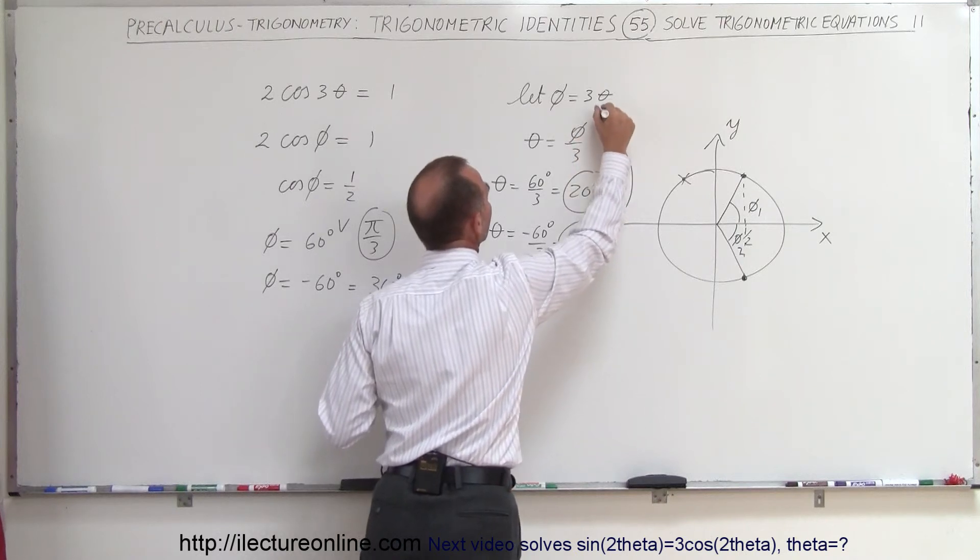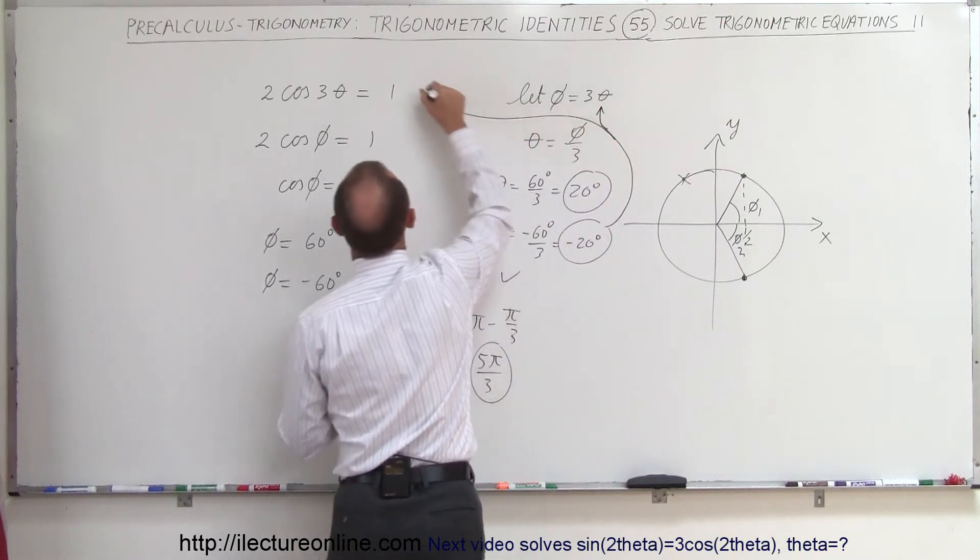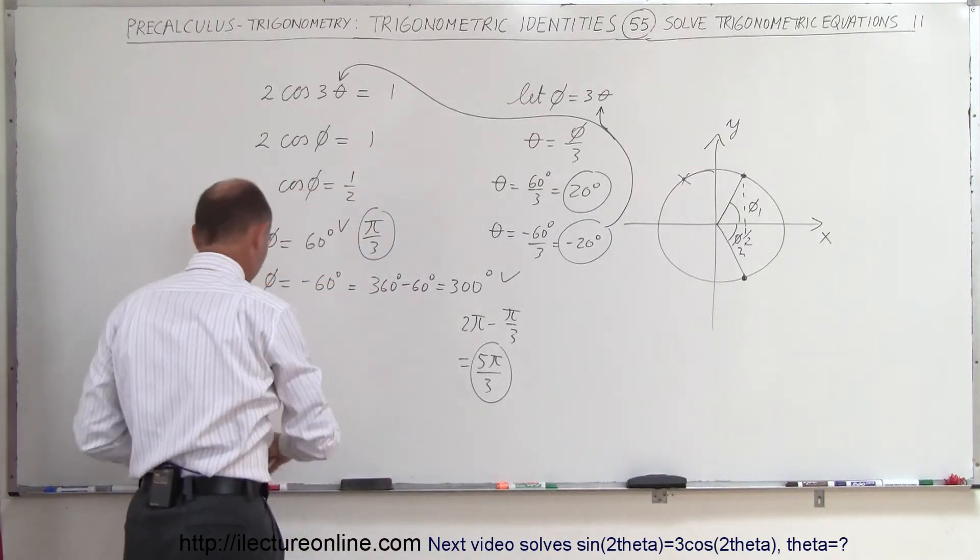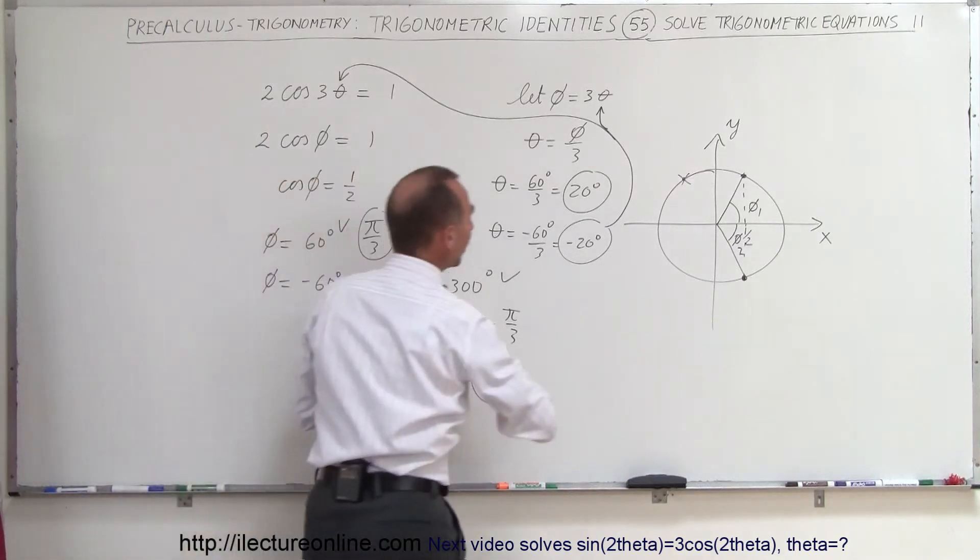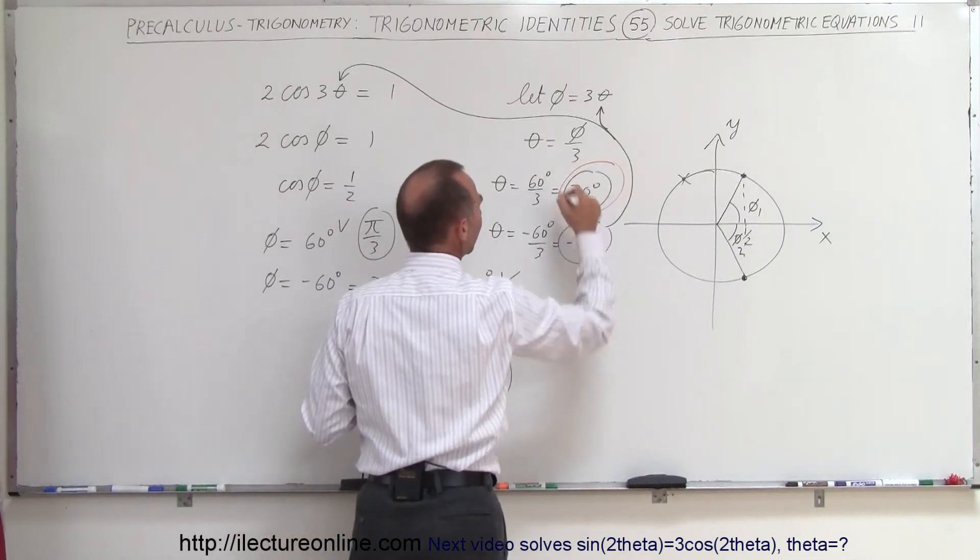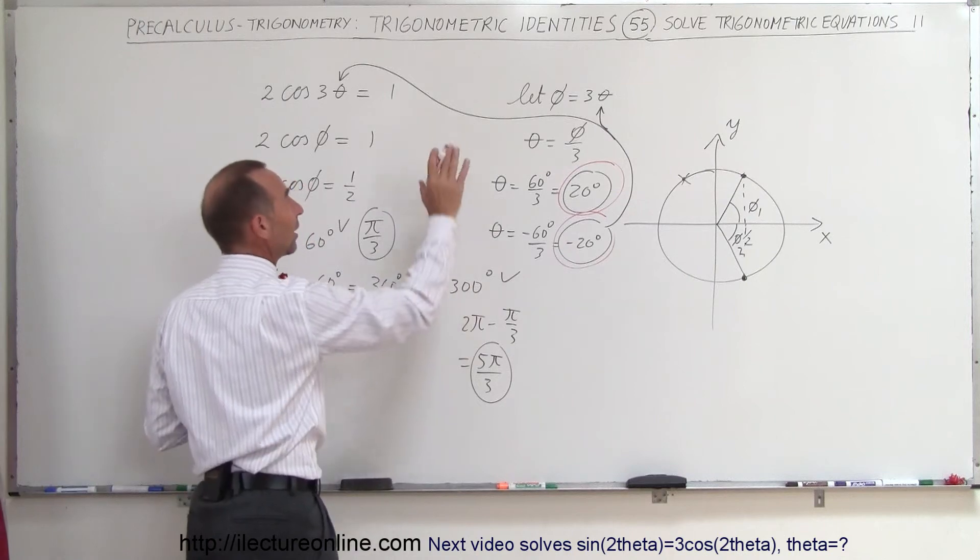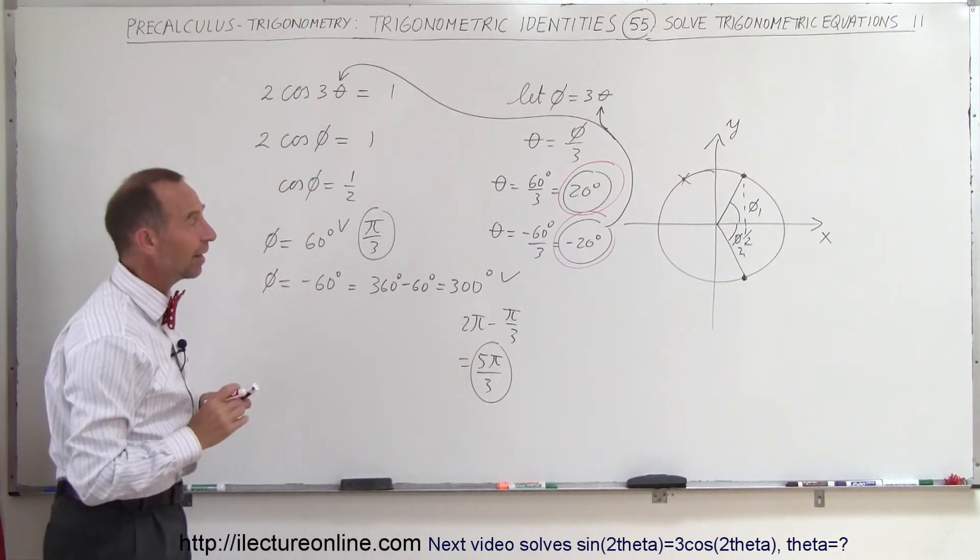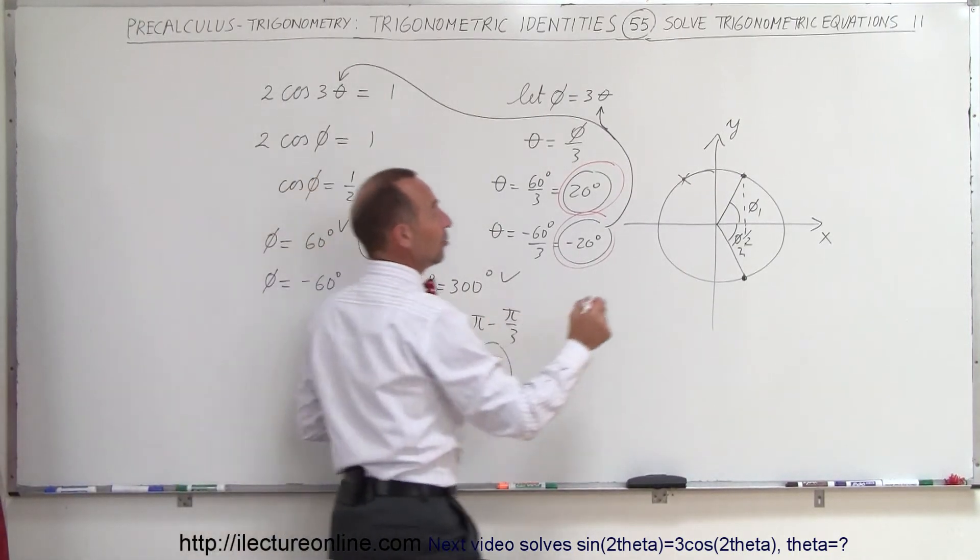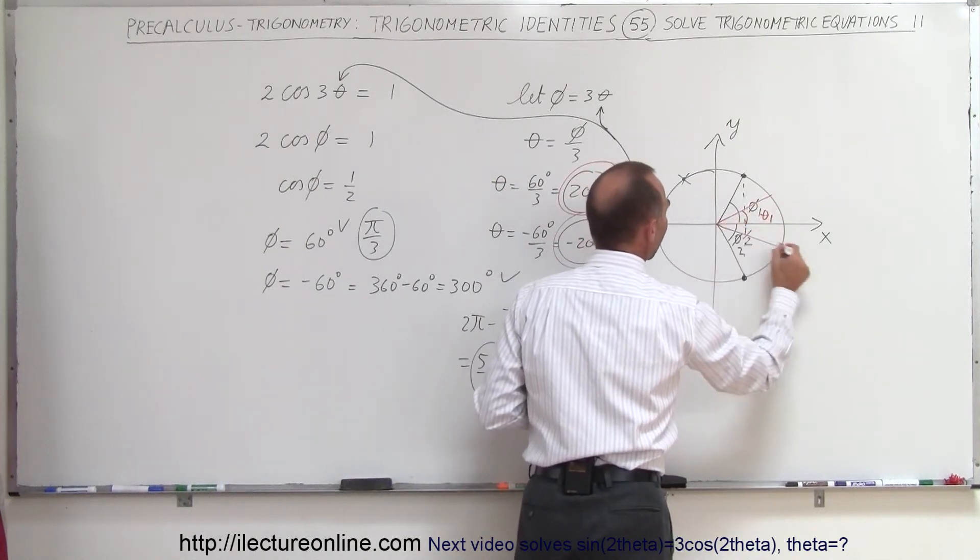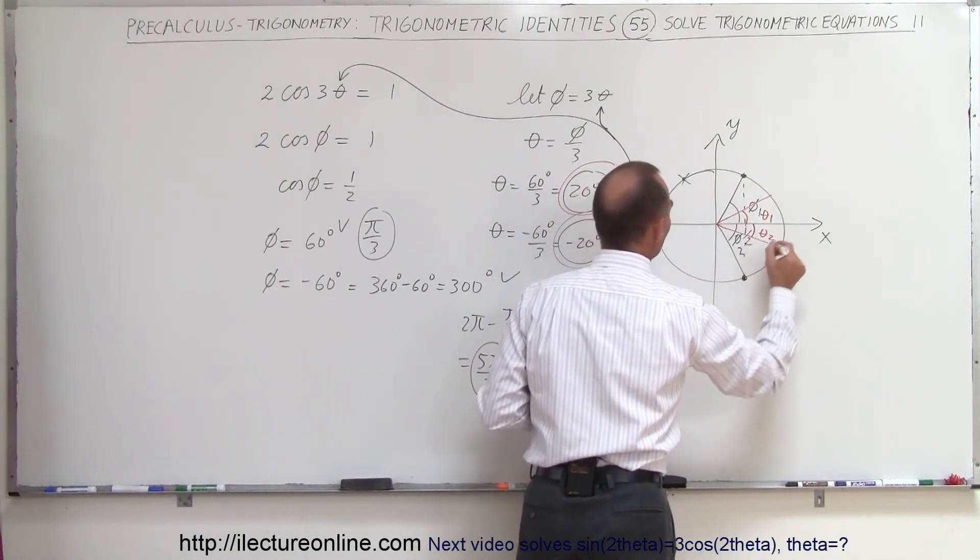Theta right there, which is the angle in our original problem. So, the real solution, and let me make sure that we are clear on that. The real solution, of course, is this. And this, it's not the 60 and the minus 60. That's just the solution when I replace theta by phi, which means I'm actually looking for an angle of 20 degrees right here, which is theta 1 and minus 20 degrees right here, which is theta sub 2.